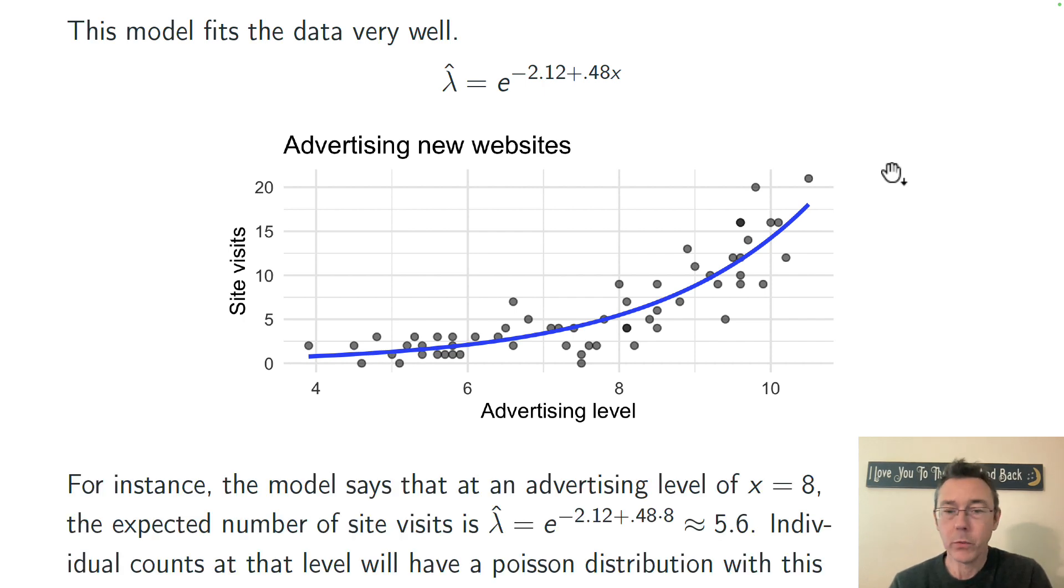So for instance, we can plug in different x values and get predicted mean counts for different advertising levels. If x equals 8, I can plug that in. I get a lambda hat, an estimated mean number of visitors to the website of 5.6. Of course, individual counts are going to vary based on that Poisson distribution from that random component. So in theory, if I were to take a slice at any different x value here, I should see a Poisson distribution with that parameter lambda for that x value.